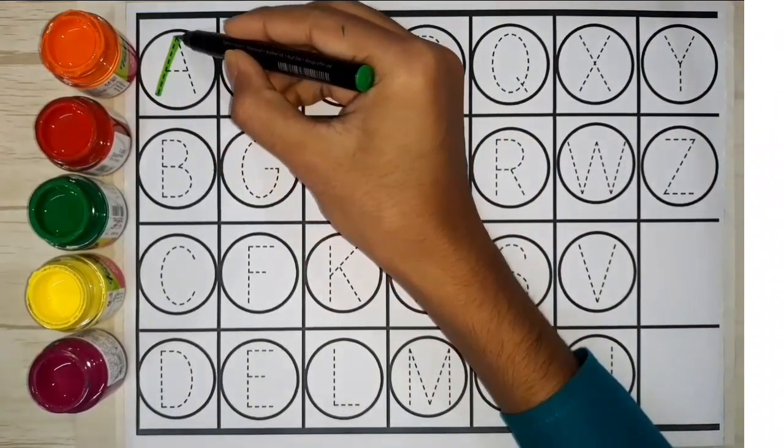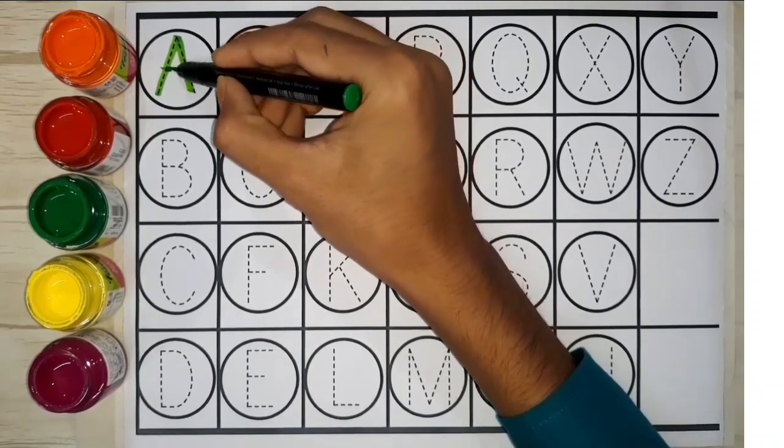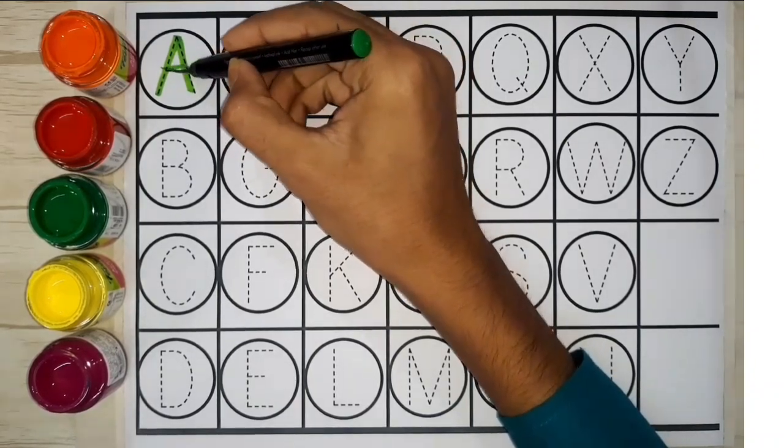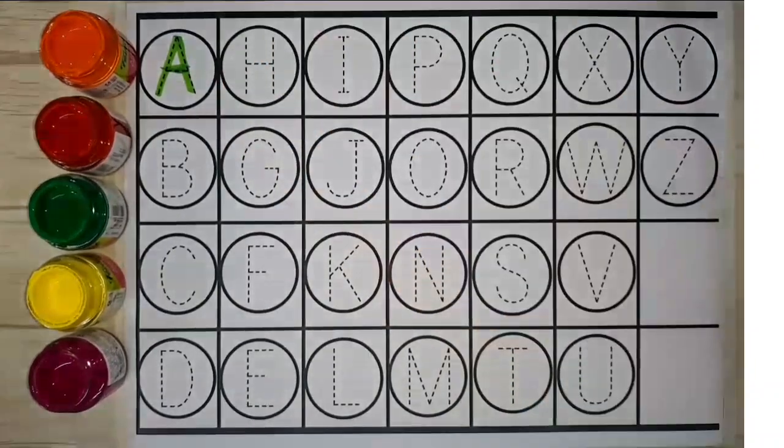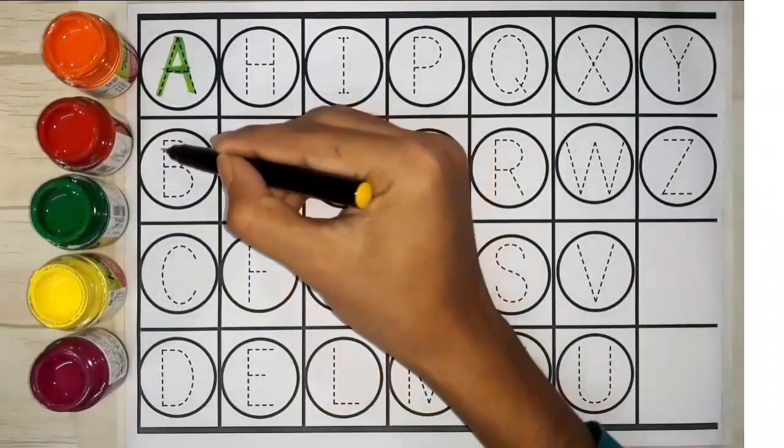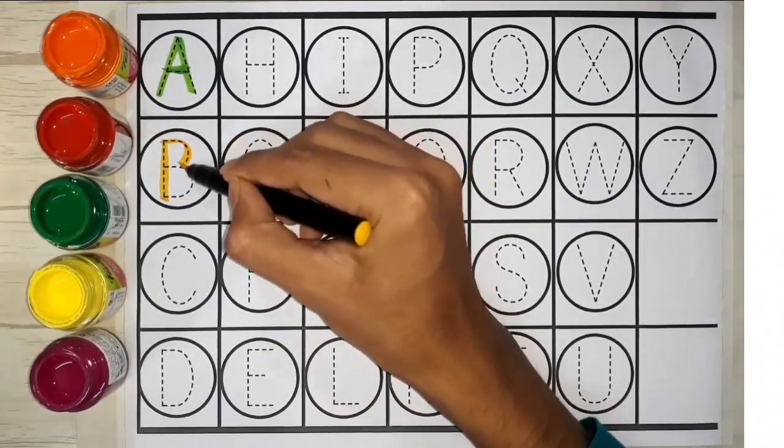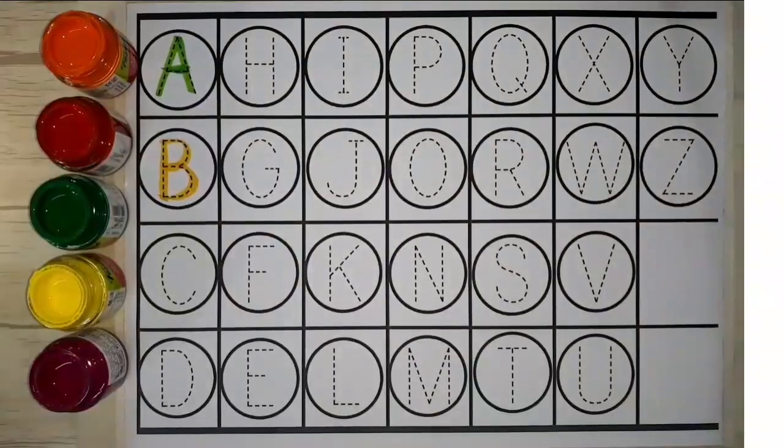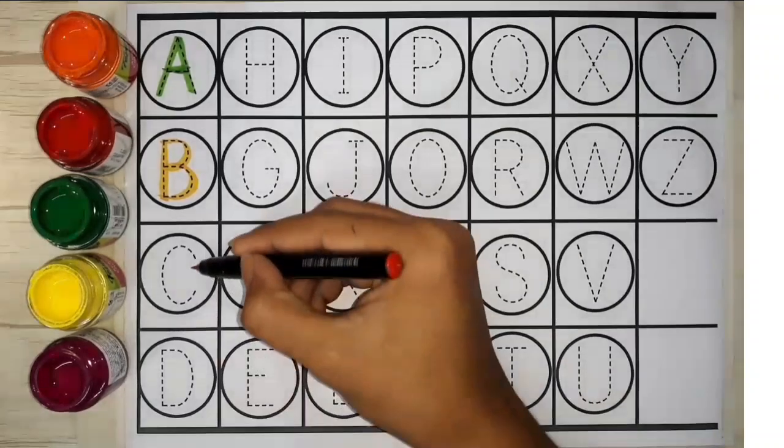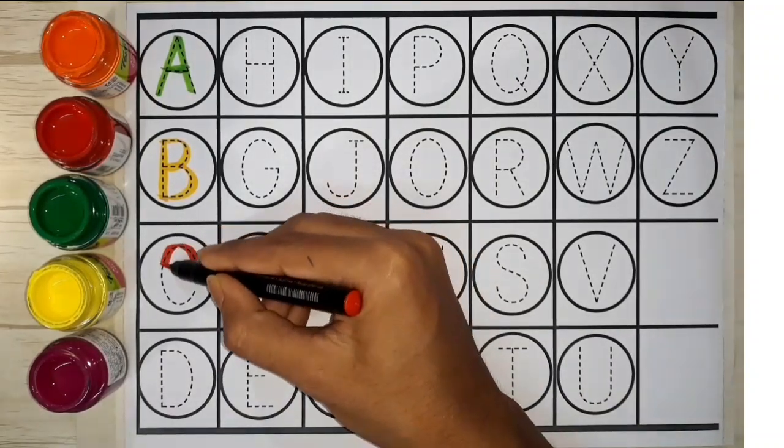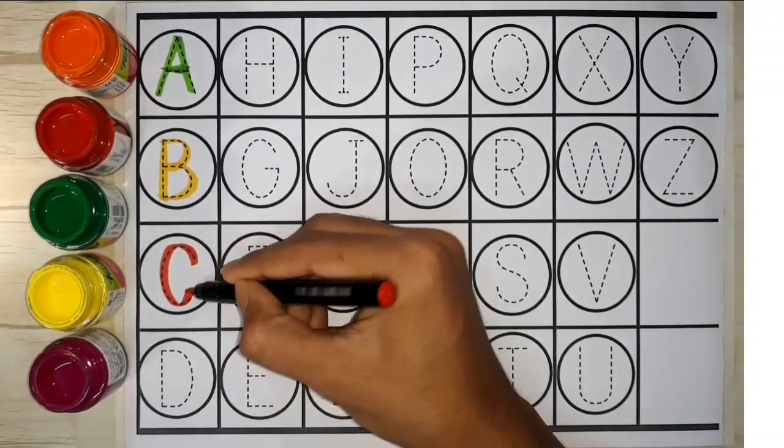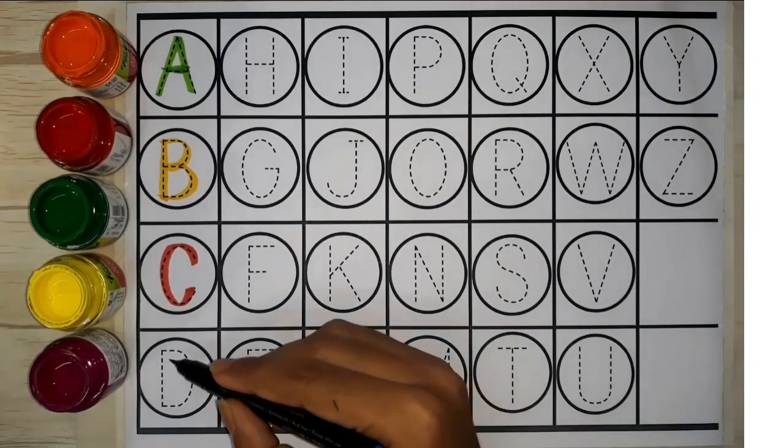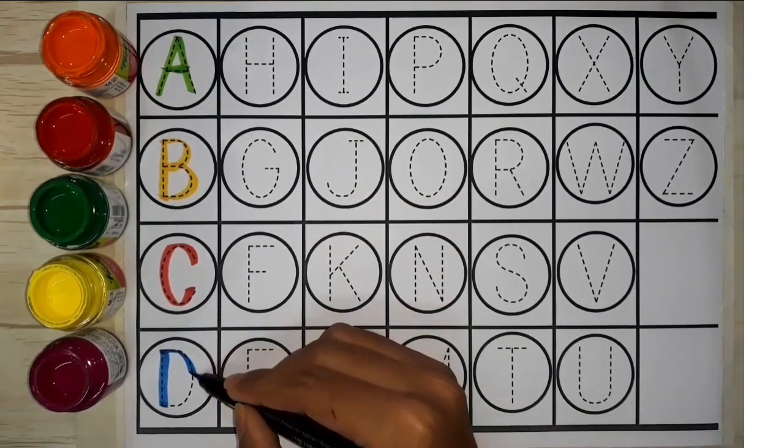A. A for apple. B. B for ball. C. C for cat. D. D for diary.